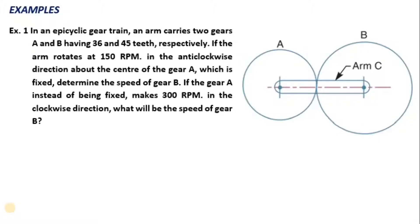In an epicyclic gear train, an arm carries two gears A and B having 36 and 45 teeth respectively. If the arm rotates at 150 RPM in anticlockwise direction about the center of gear A which is fixed, determine the speed of gear B.